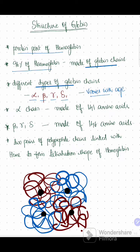Like polypeptide chains are made of amino acids, the alpha chain is made of 141 amino acids.